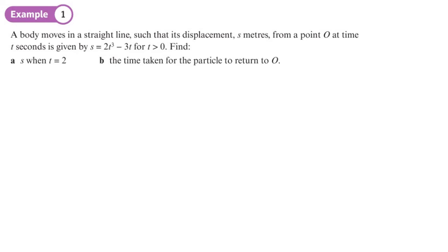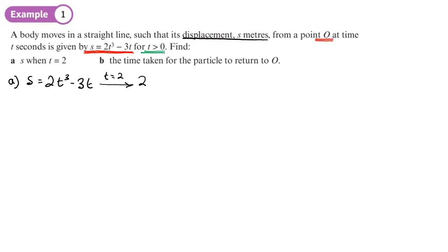A body moves in a straight line such that its displacement s metres from a point O at time t seconds is given by s = 2t³ - 3t, for t ≥ 0. Part a: find s when t = 2. We substitute t = 2: s = 2×(2³) - 3×2 = 2×8 - 6 = 16 - 6 = 10. So s = 10 metres.